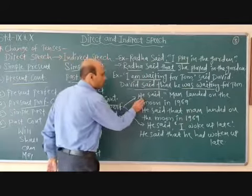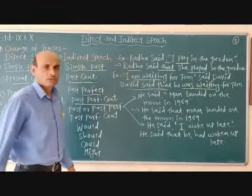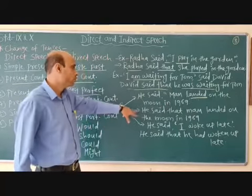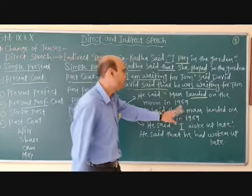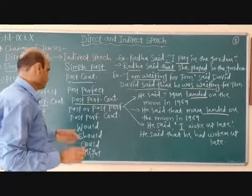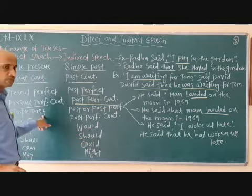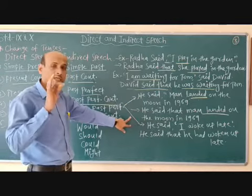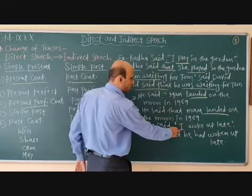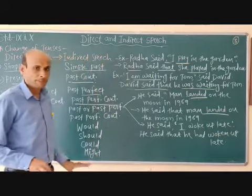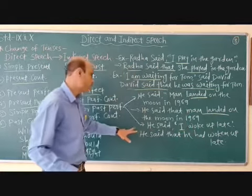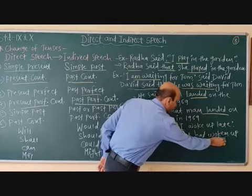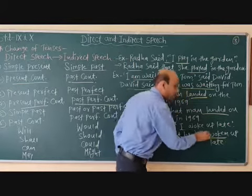For example: He said, "Man landed on the moon in 1969." What is the tense? Simple past. So the indirect will be: He said that man landed on the moon in 1969. Now coming to sentence number two: He said, "I have occurred late." What is the tense of this speech? Simple past. So it will become past perfect: He said that he had occurred late.